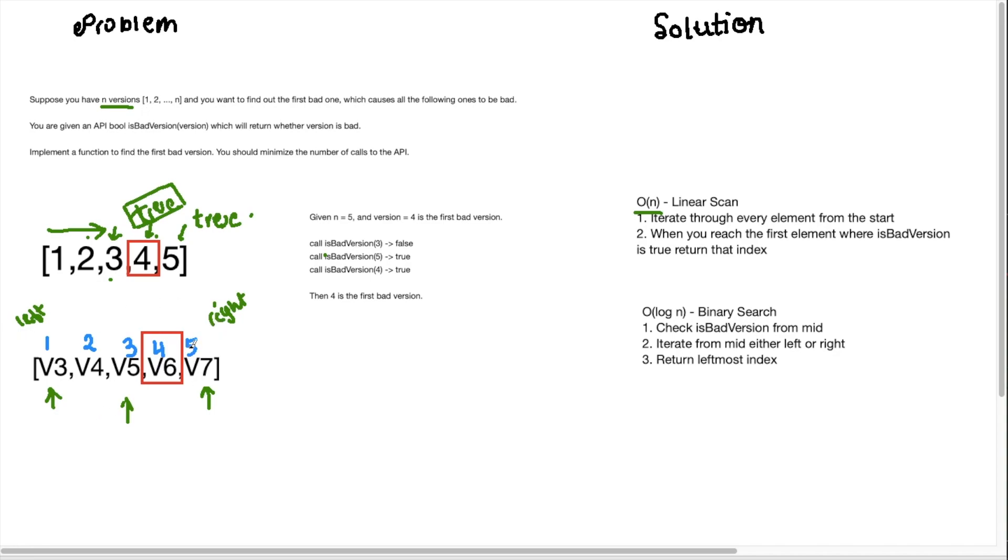And so if we did a regular binary search on this array, our midpoint would be three over here. And if you haven't done binary search before, I highly recommend you do that before approaching this question because it's going to make it easier for you to understand.